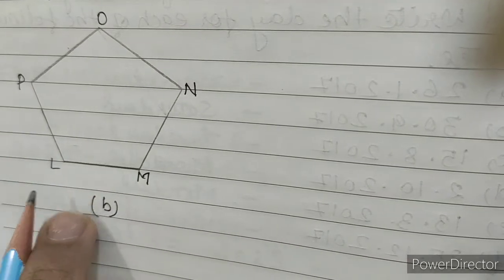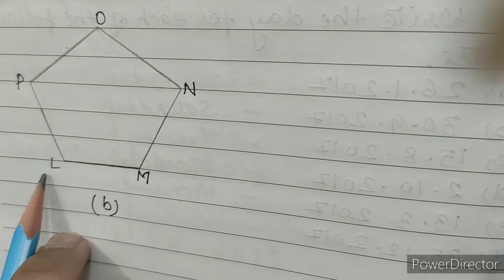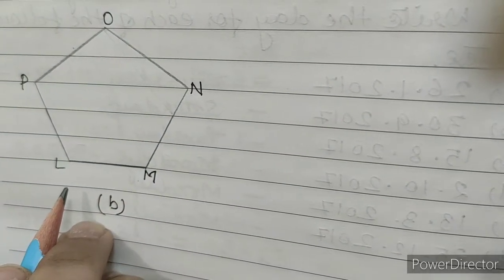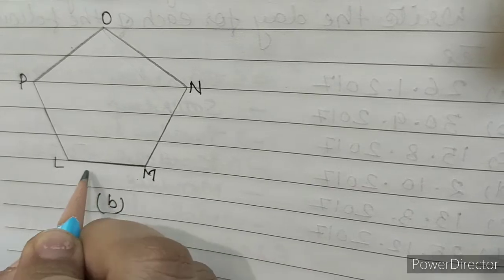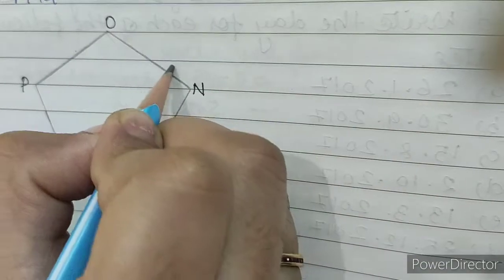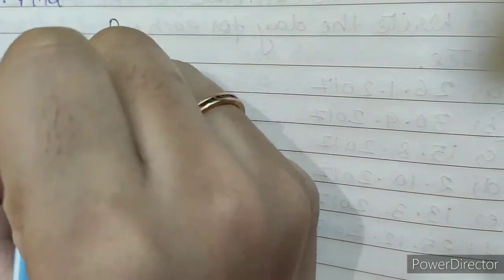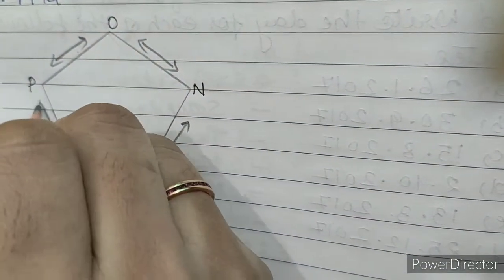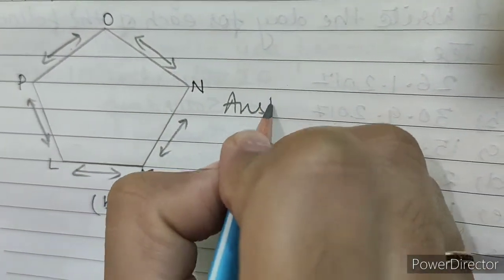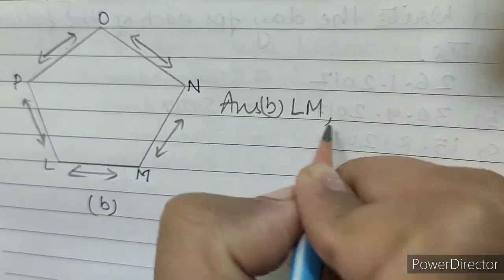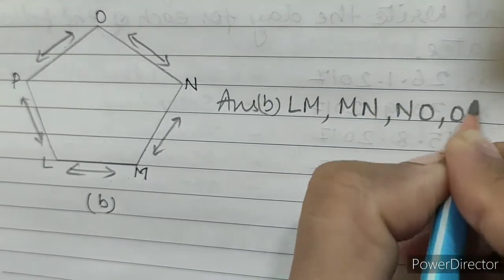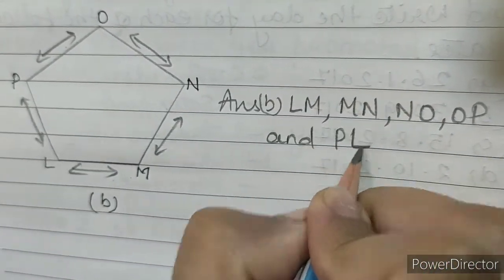B, as we can see this is pentagon LMNOP. In this we have to mention the line segments: LM, MN, NO, OP and PL are the line segments. So our answer is LM, MN, NO, OP and PL.